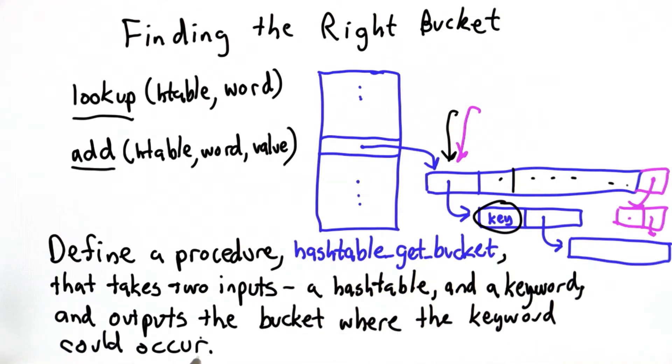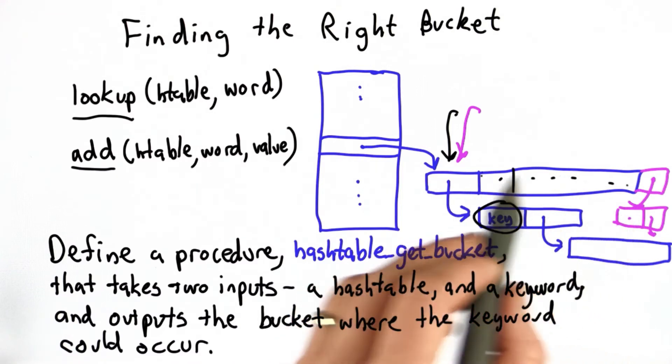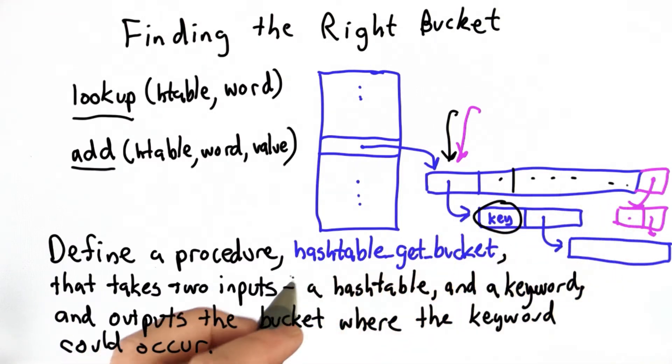It will output the bucket where that keyword could occur. We don't know yet whether that keyword is actually in the table. It might be somewhere in that bucket or it might not, but the important thing that hashtable_get_bucket should do is find the bucket.